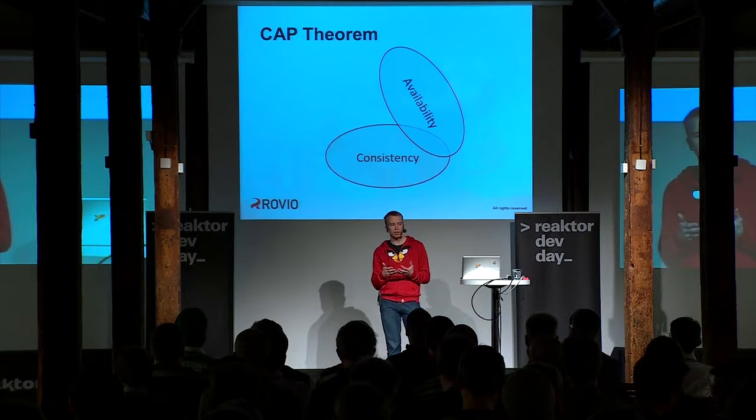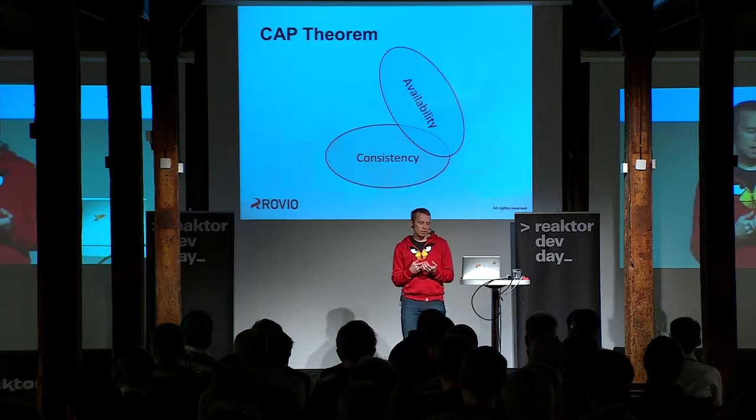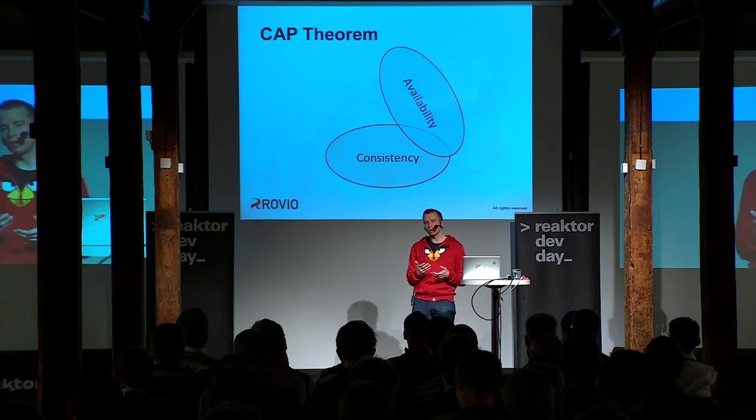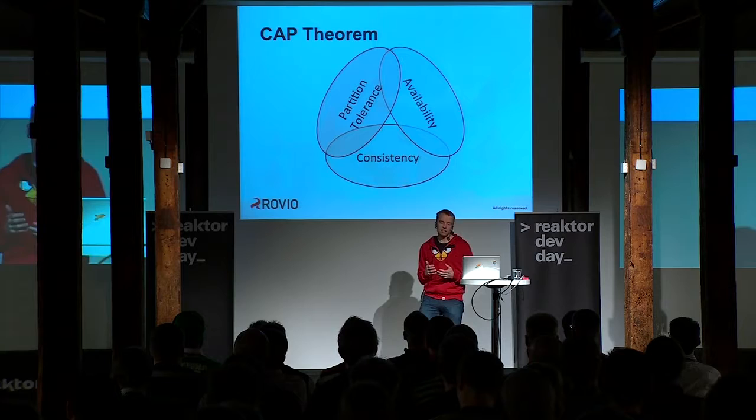However, there are some problems with that approach. Even though we have a master-slave setup or similar for high availability, we may have trouble in our network or between our nodes, or one of the nodes could fail. The CAP theorem states that you can't have all three properties — you can't have a partition-tolerant system that is both highly available and consistent.